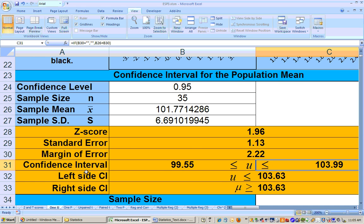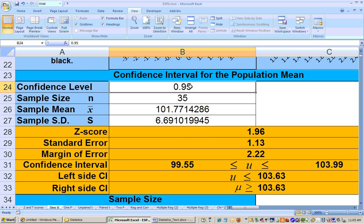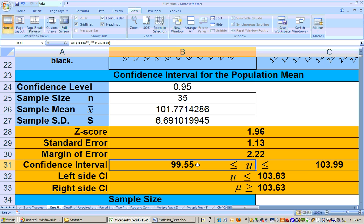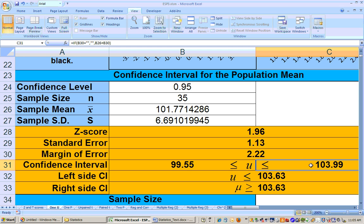That's the area that we use. We don't use this area that says left side or right side interval. We would summarize this to say that I am 95% sure that the average cost for all air flights, not just these 35, but the average cost of all air flights from Atlanta to Chicago is somewhere between $99.55 up to $103.99. That would be the summary on this.